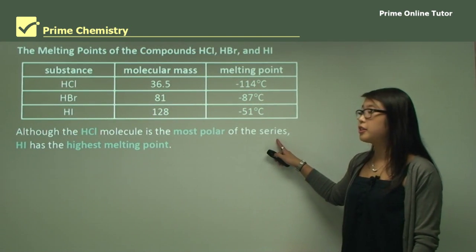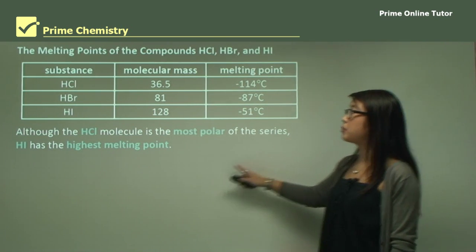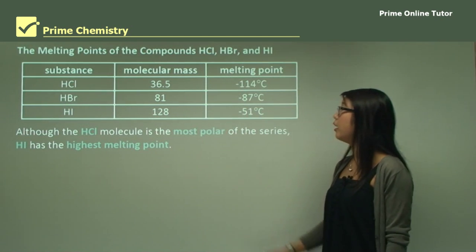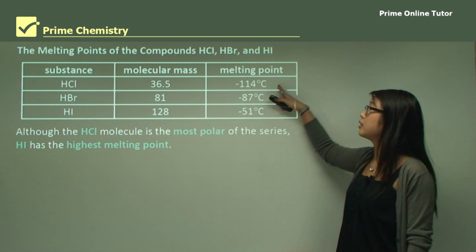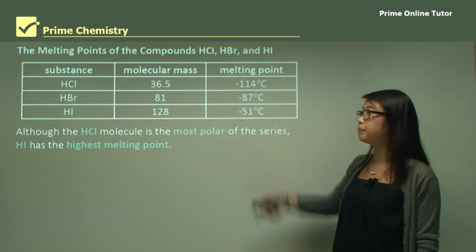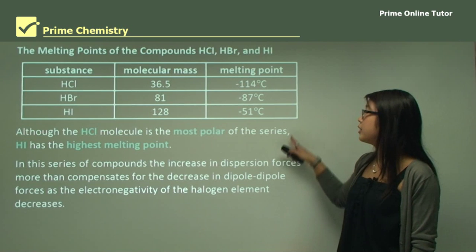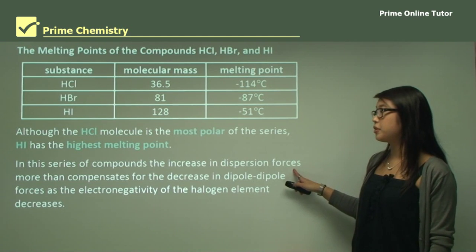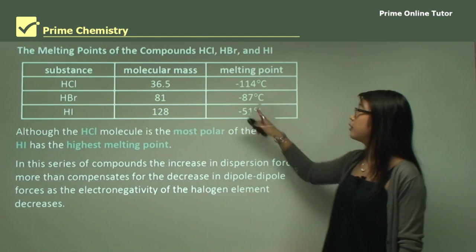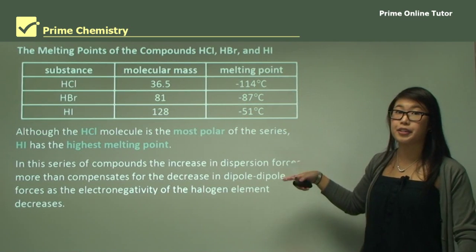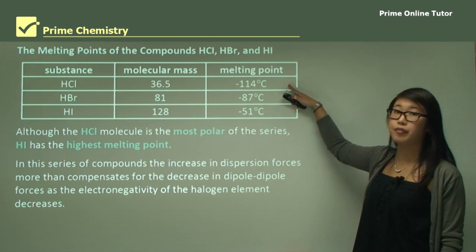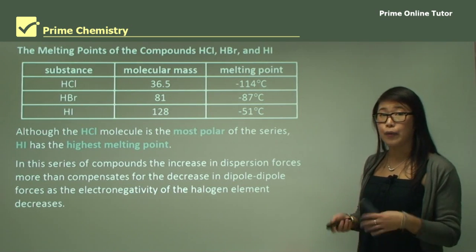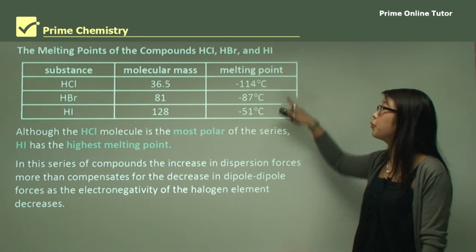Although hydrogen chloride is a polar molecule — because chlorine is electronegative, pulling electrons closer to it compared to hydrogen — it doesn't have the highest melting point in its series, with minus 114 compared to minus 51 for HI. HI has the highest melting point in this series because it has more dispersion forces, which compensate for the dipole-dipole ones in hydrogen chloride. So even though HCl is polar, the total dispersion forces in HI are stronger overall.